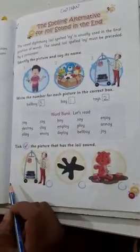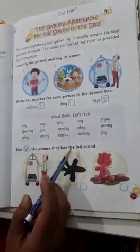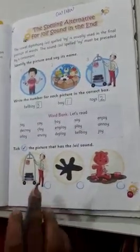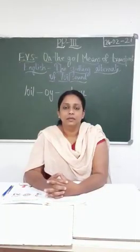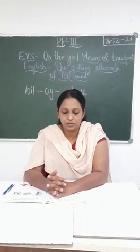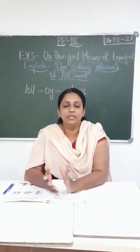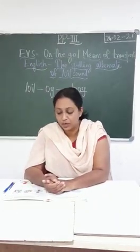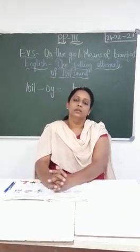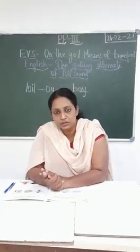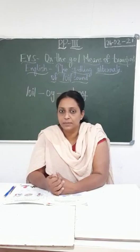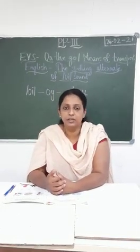This part is your homework — you have to tick the picture that has the OI sound in it. Parents, while your children learn about different means of transport and how many people each vehicle can carry, or while they learn about the spelling alternate for the OI sound at the end of a word and related words, kindly take a video and send it to the school WhatsApp number. Homework will also be sent to your number. Thank you. Bye-bye.